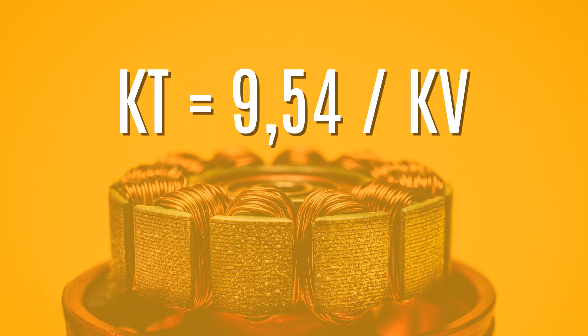The first problem is just a minor one, because KT does not equal 1 divided by the KV. If the KV is given in revolutions per minute, the KT is approximately 9.54 divided by the KV.